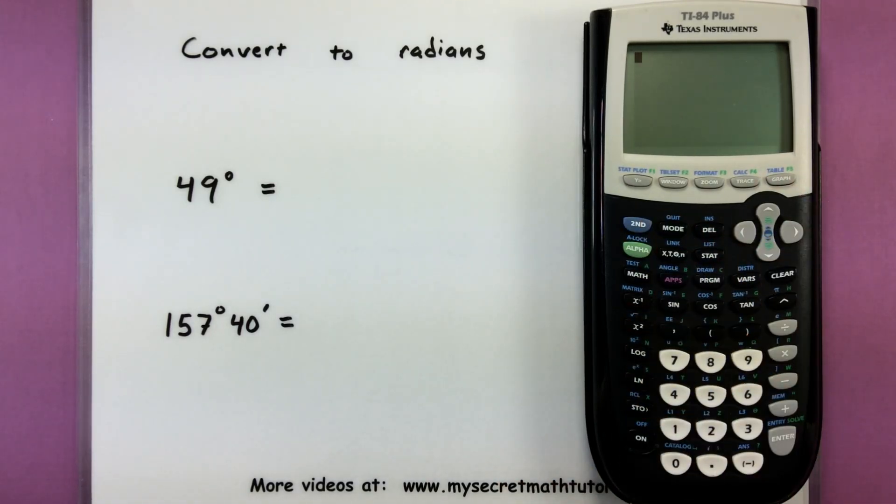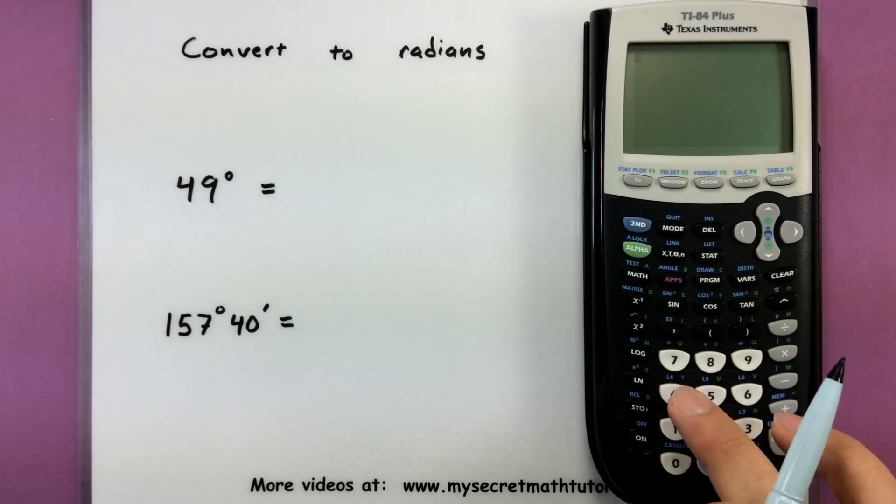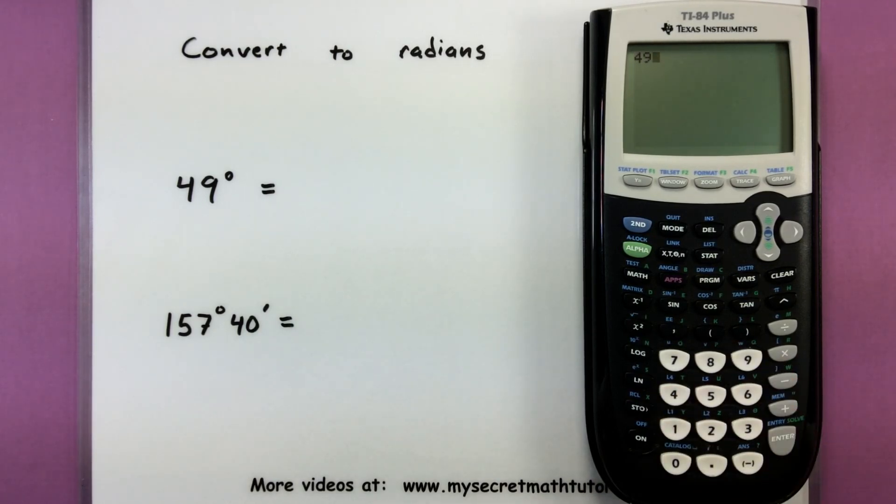And now we go through essentially the same process, but we're going to tell the calculator, hey, here's 49 in degrees, and it will automatically convert it into radians.